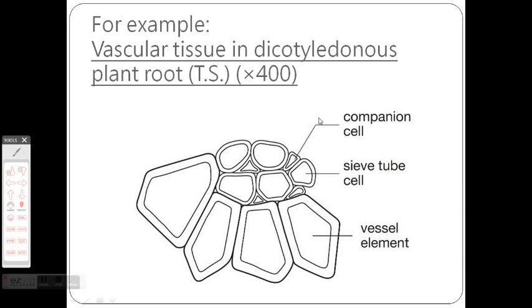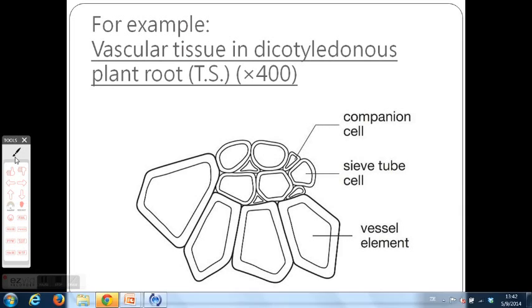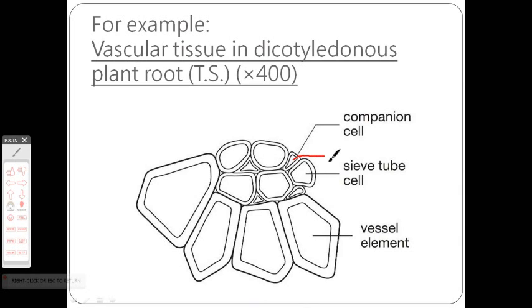You can see that labeling lines are still horizontal. But if you draw the horizontal line here and indicate this is a companion cell, maybe the words would be too close together and not pretty. So she used a line like this and then horizontal. This is still counted as a horizontal line and this is okay.